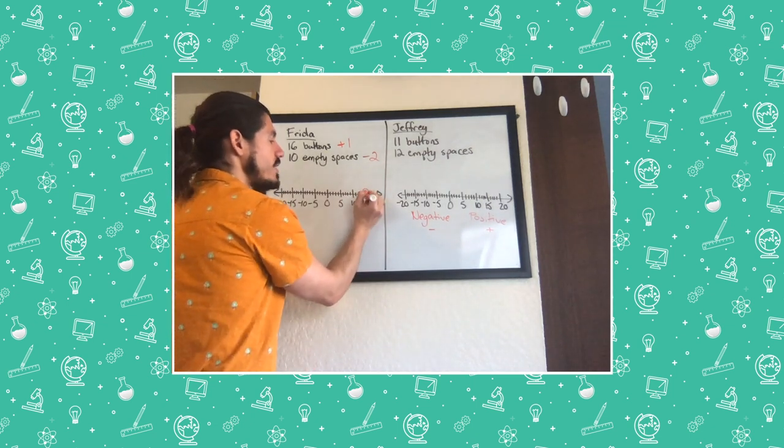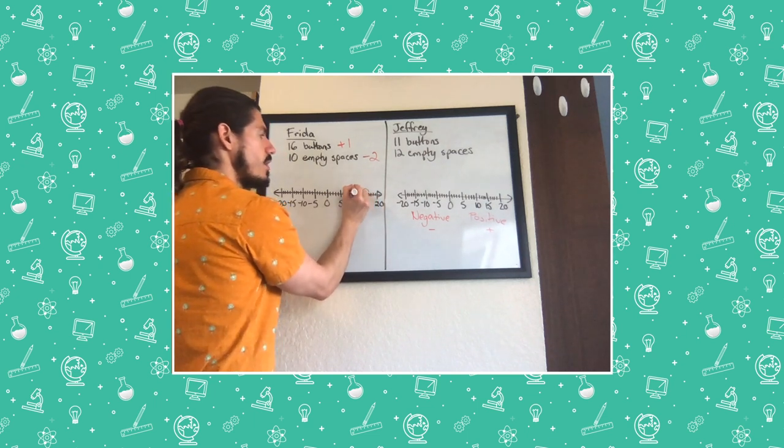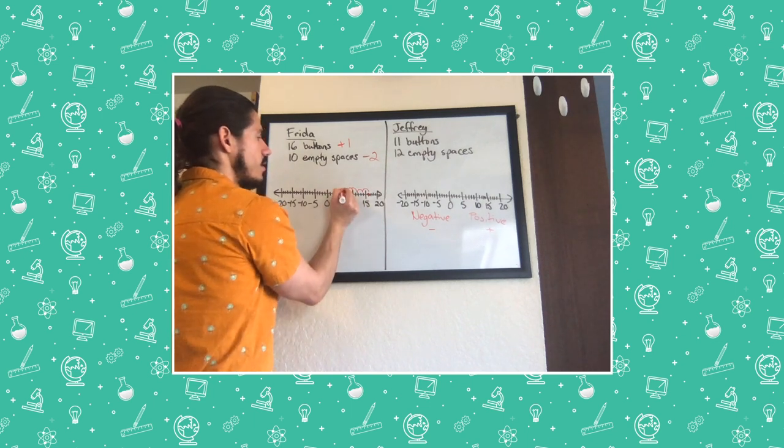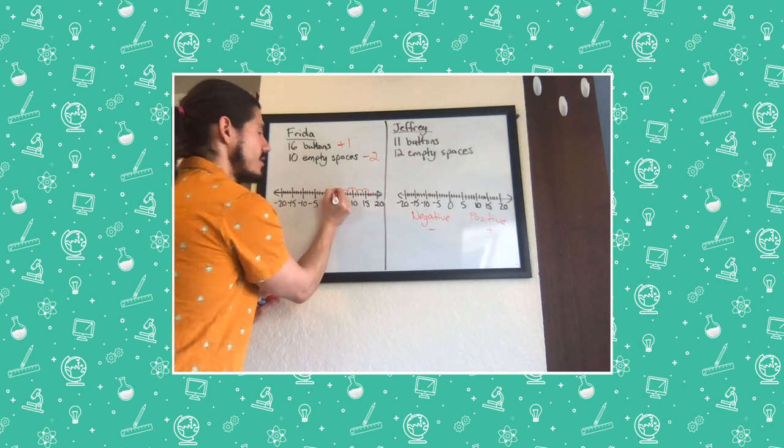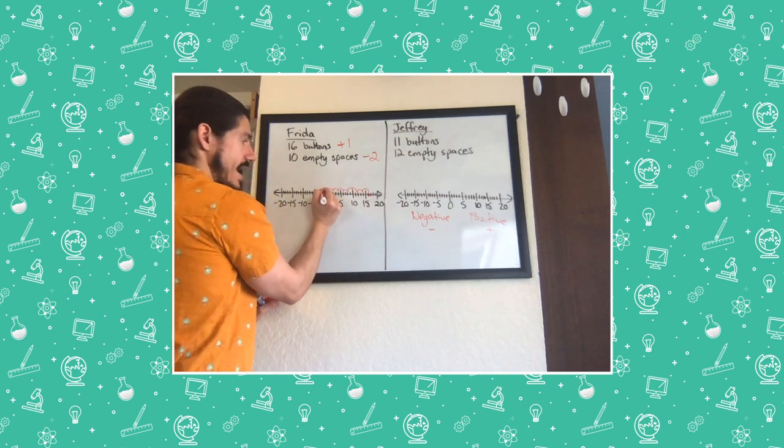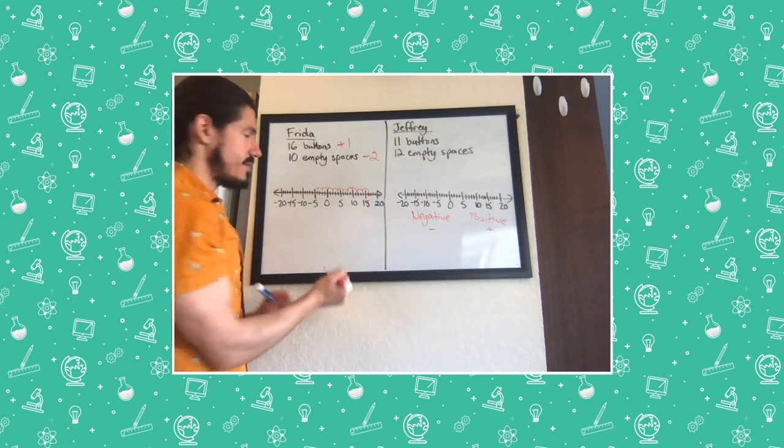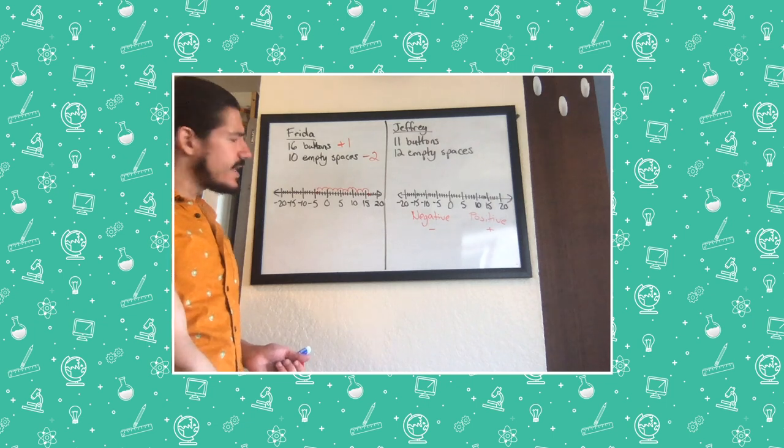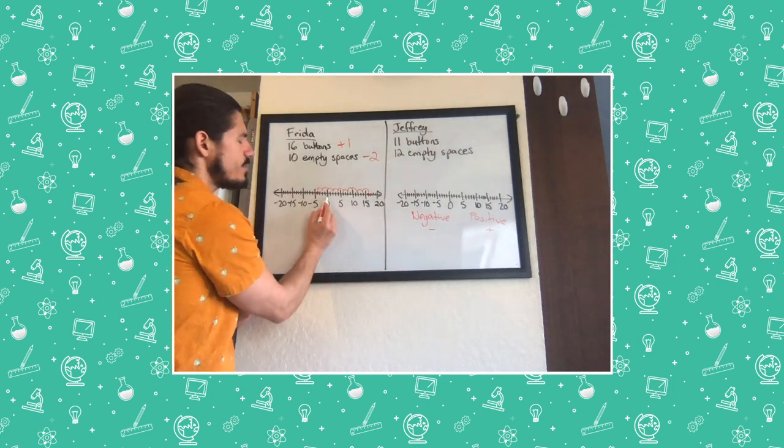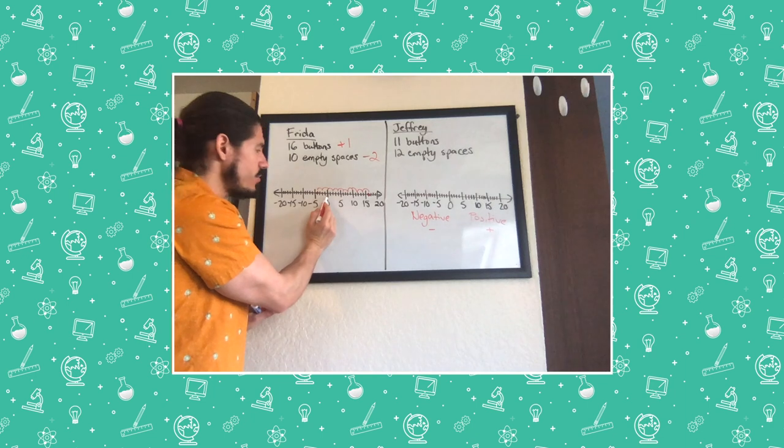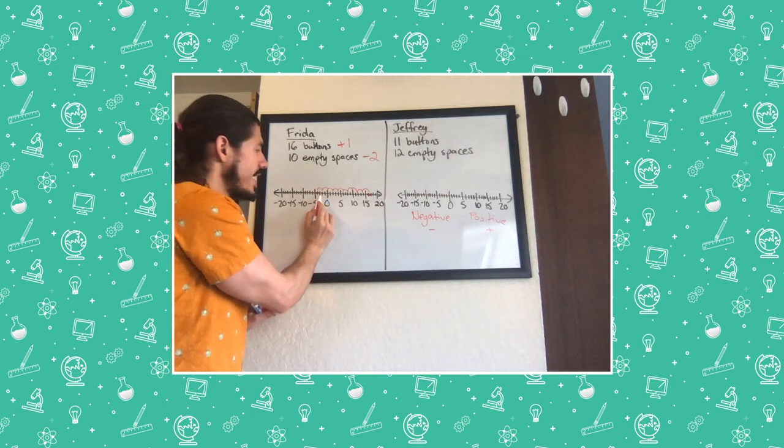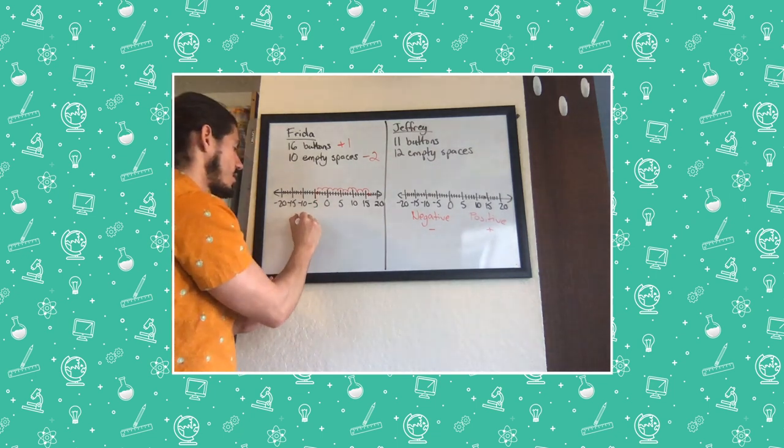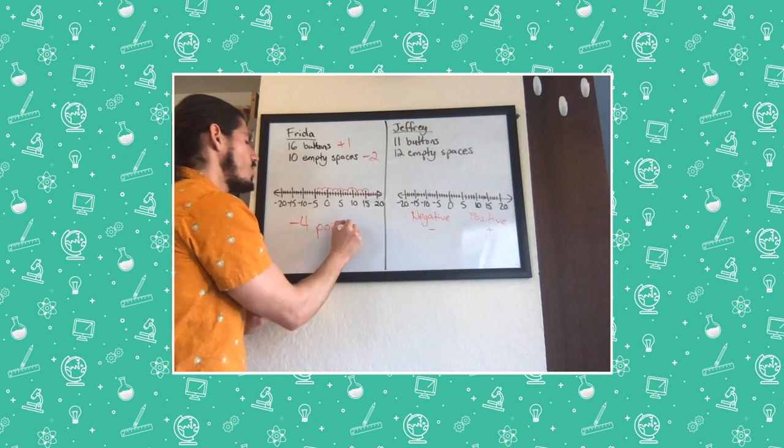But she did have 10 empty spaces and every empty space is negative two points. So we are going to have to go back. I'm going to do jumps of two, of negative two, I should say, until I find out how many points she got. So we've got one, two, three, four, five, six, seven, eight, nine, ten. What number did I land on? Let's see. Here's zero. If I'm counting down from zero, we've got negative one, negative two, negative three, negative four. So Frida got negative four points.